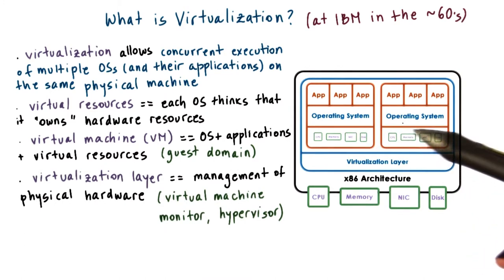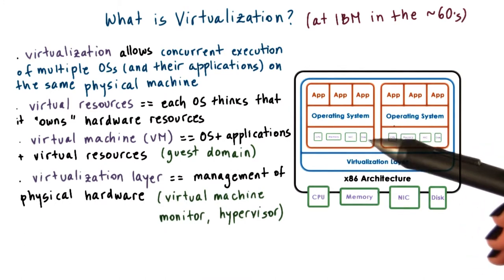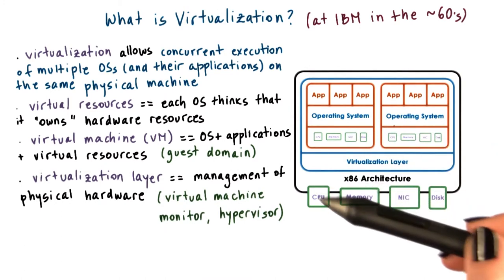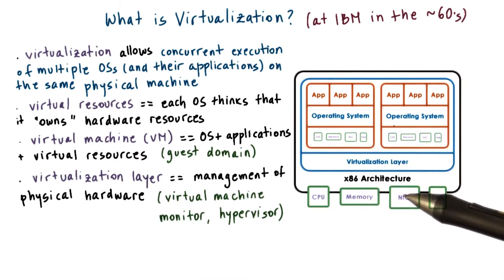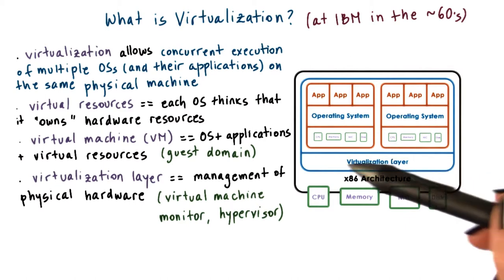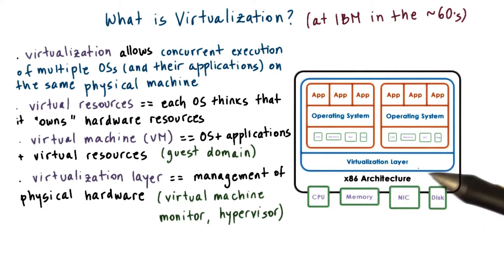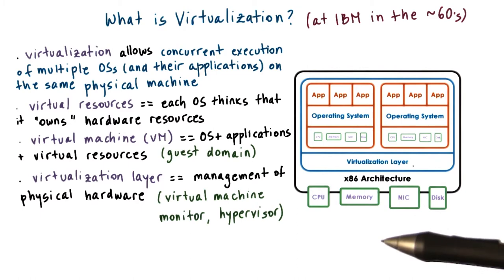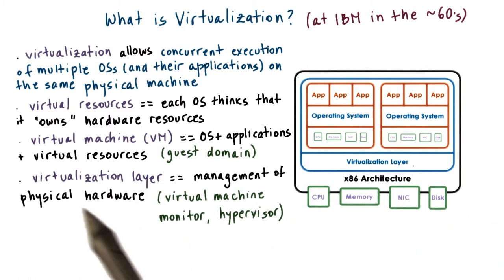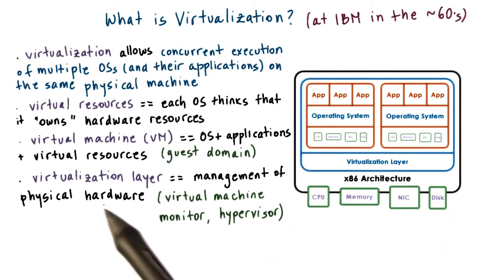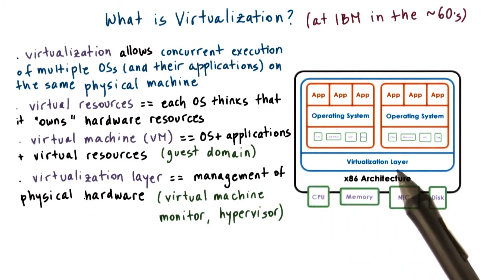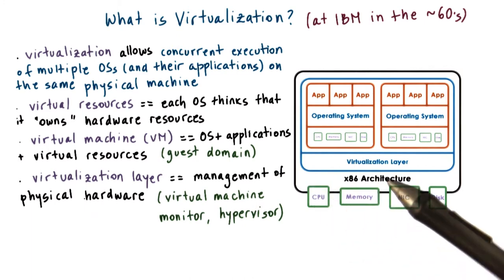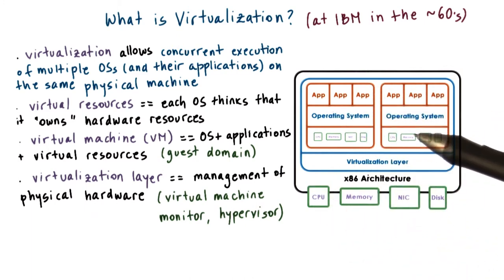To support the coexistence of multiple virtual machines on the same physical machine requires some underlying functionality in order to deal with the allocation and the management of the real physical hardware resources. In addition, it's necessary to provide some isolation guarantees across these VMs.